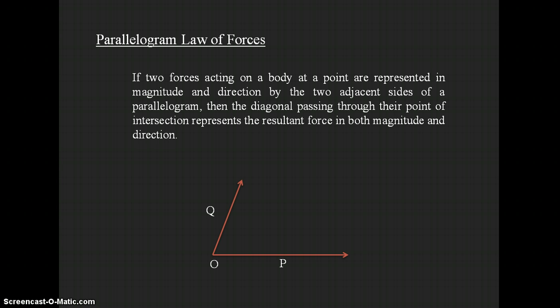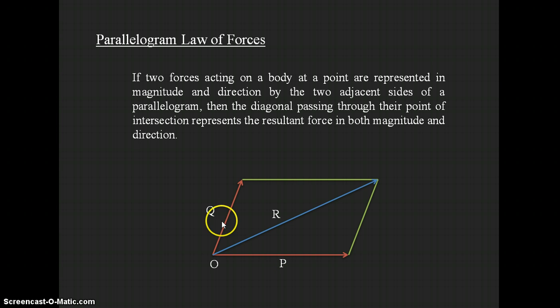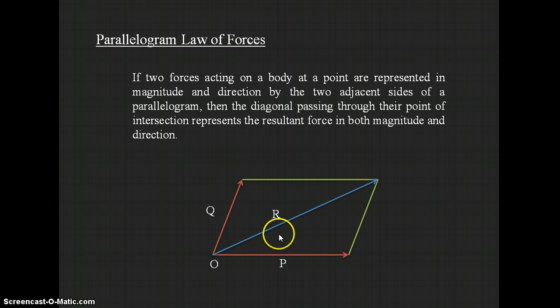I am completing the parallelogram using the two force directions by drawing the two remaining adjacent sides, and then drawing the diagonal. This diagonal represents the resultant force of the two forces. This resultant force is equal to the resultant of P and Q in magnitude and direction. If the two forces are drawn with lengths proportional to their magnitudes, then the length of this diagonal will equal the magnitude of the resultant force.